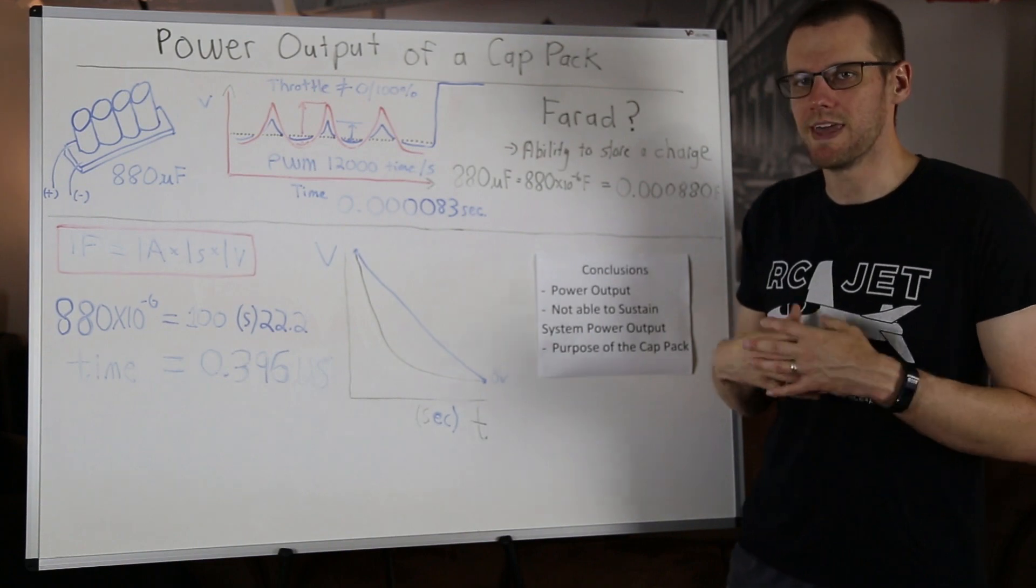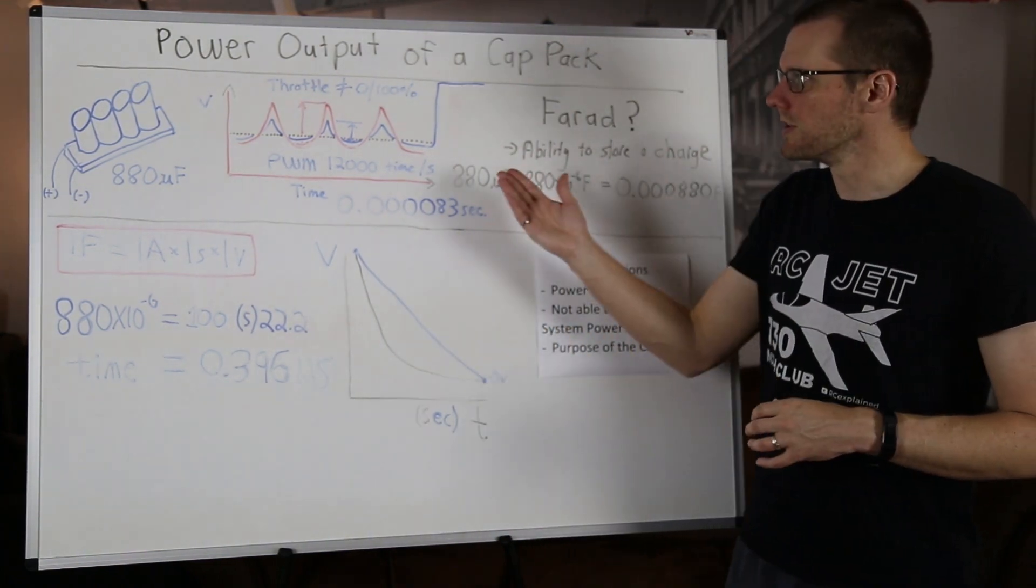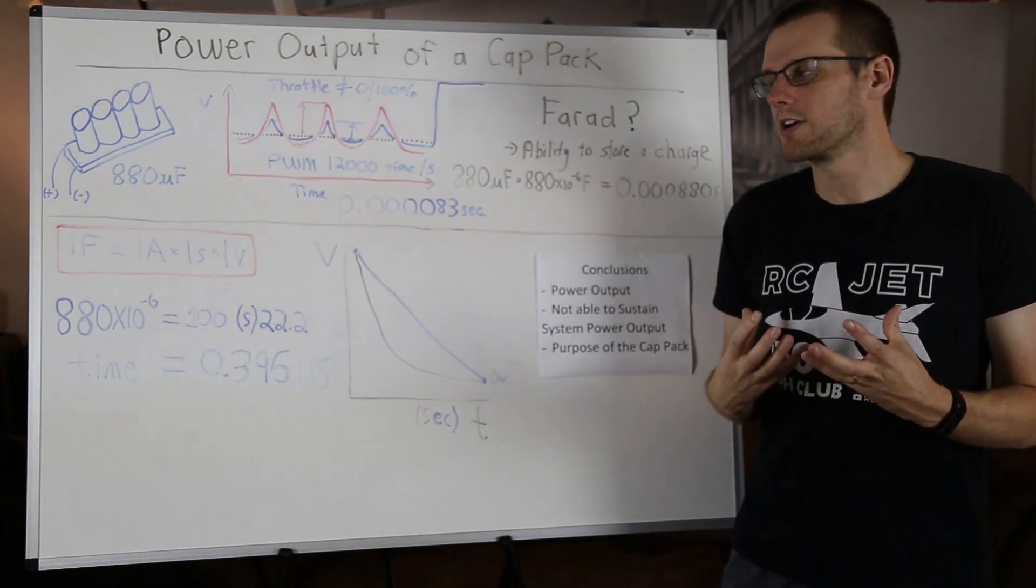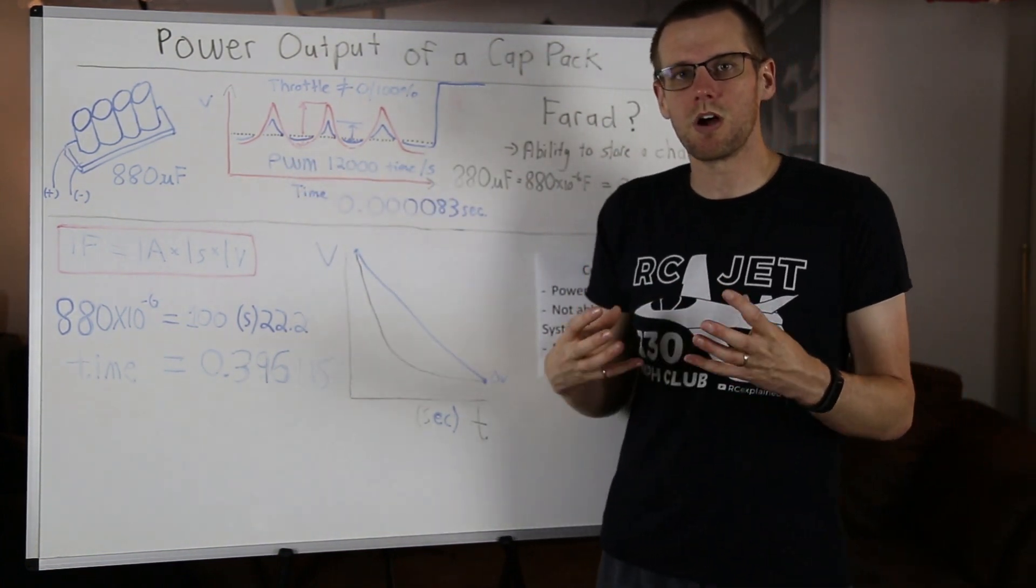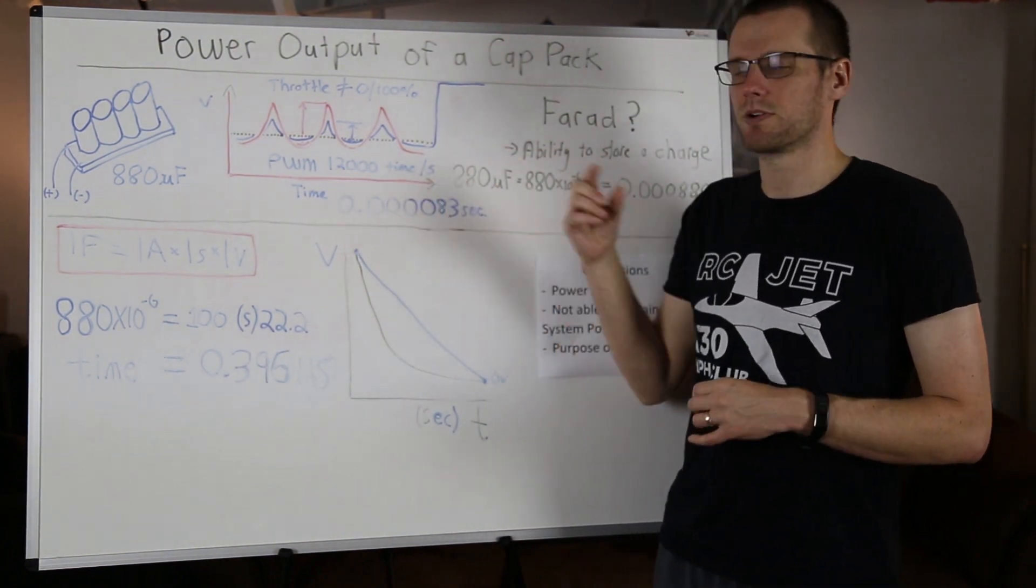And that is defined by the user pulling the trigger on your radio. What is also interesting to note here is that the PWM feature within the electronic speed control to control RPM of the motor happens at 12,000 times per second.